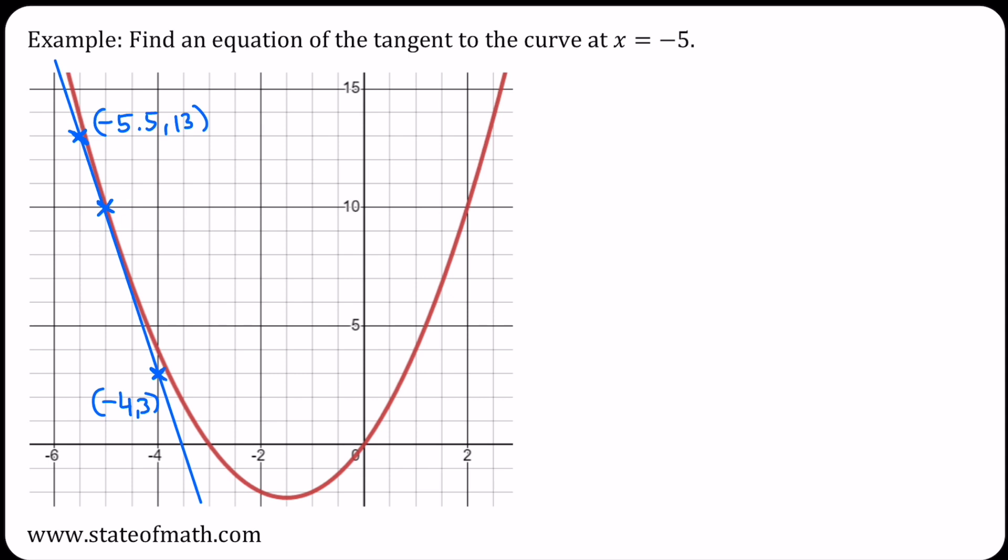I will use these two points to find the gradient. Let me write out the two points. It's minus 5.5, 13, and then minus 4, 3. So the gradient will be y2 minus y1 over x2 minus x1, which gives an answer of minus 20 over 3.